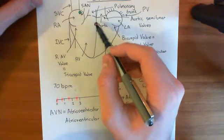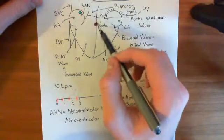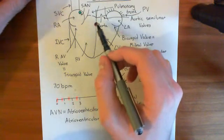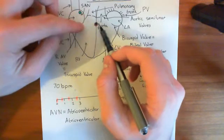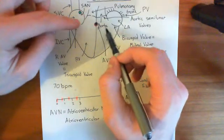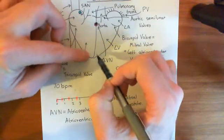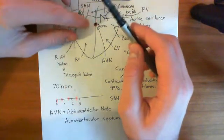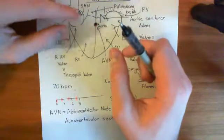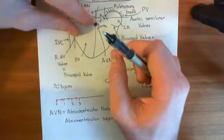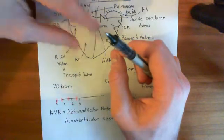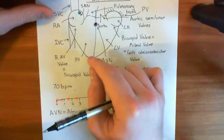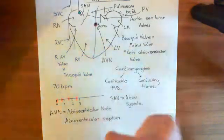You might wonder why we don't just let the action potential spread across the ventricular myocytes of the left and right ventricles. The problem is that the action potential would reach the cardiomyocytes at the top of the ventricles first, then propagate down to the ones at the bottom. The ones at the top would begin contracting before the ones at the bottom — you'd be pushing the blood down into the base of the heart, and you'd risk the heart rupturing.